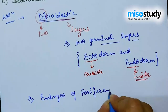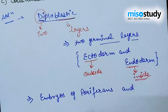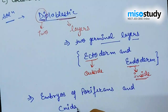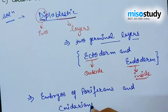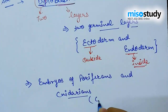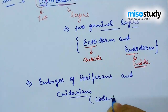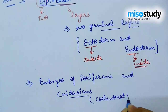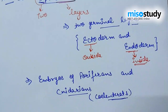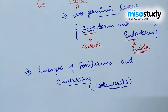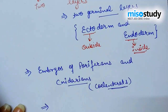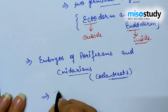Diploblastic layers are generally shown by the embryos of Poriferans and Cnidarians. Cnidarians are also known as Coelenterata. So when discussing diploblastic layers, the answer is Coelenterata.